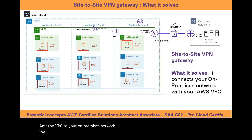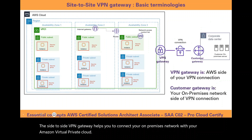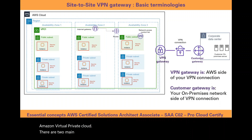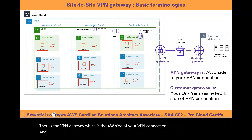We will first cover what a site-to-site VPN gateway is and what it solves. The site-to-site VPN gateway helps you to connect your on-premises network with your Amazon Virtual Private Cloud. There are two main components of a VPN gateway: the VPN gateway, which is the AWS side of your VPN connection, and the customer gateway, which is your on-premises network side of the VPN connection.